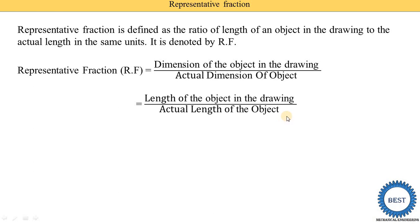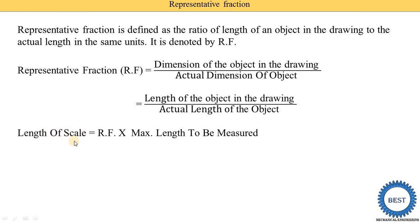In numerical problems of scale, the representative fraction is given and the maximum length of the object is given. Maximum length of the object means the actual length of the object, and we need to calculate the length of the scale, means the length of the object in the drawing. Length of scale is equal to RF multiplied by the actual length of the object or maximum length to be measured. By using this equation, we can find out the length of the scale.